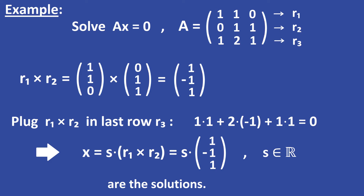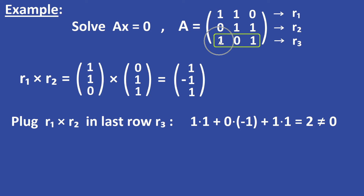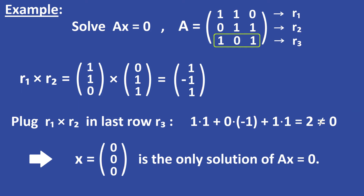We will now change the last row of the matrix. The new last row is equal to (1, 0, 1). The cross product of the first two rows R1 and R2 is still the same vector. Plugging the cross product into the new last row gives 1 times 1, plus 0 times minus 1, plus 1 times 1, which equals 2. Since this result is not equal to 0, the zero vector is the only solution of the system.